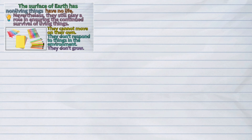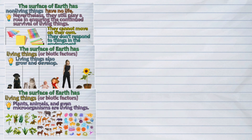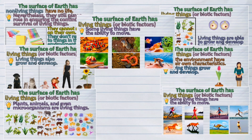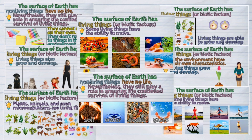Earth is made up of living things and non-living things. Living things, or biotic factors in the environment, have their own characteristics — they grow and develop. Non-living things have no life; they do not have the characteristics of living things.